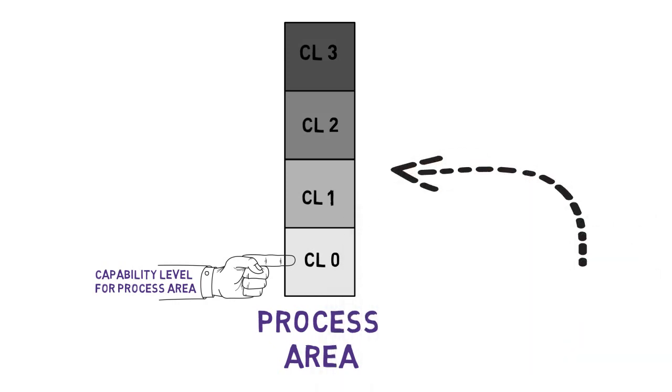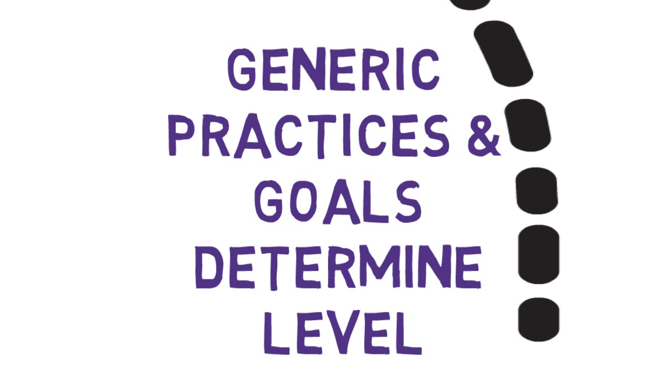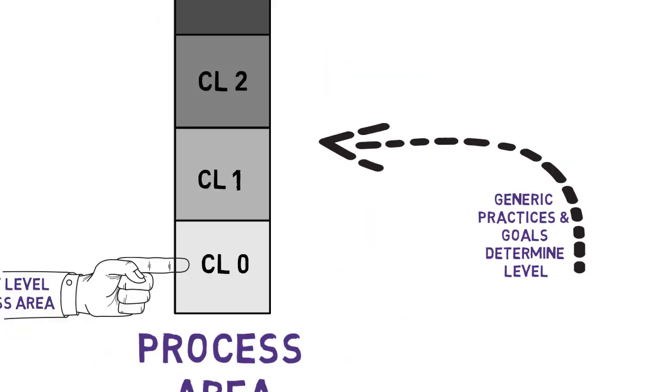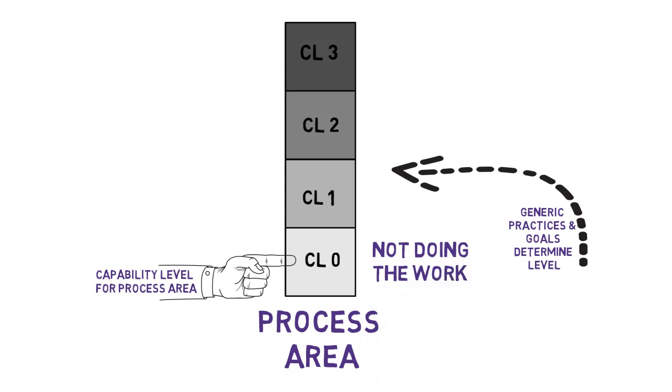And since the generic goals and practices apply to each process area, we can define levels of capability individually and also across a set. Since we're talking about levels, it's important to know that levels are defined by the generic goals and practices, and that levels can't be skipped. Each builds on the one before it.